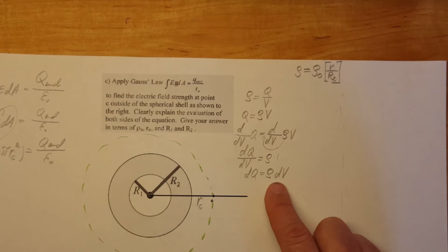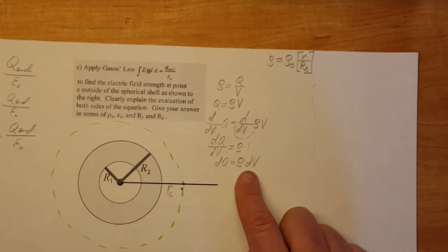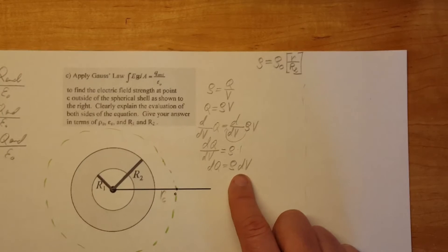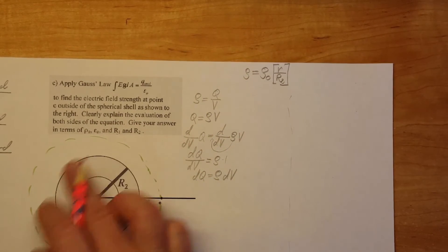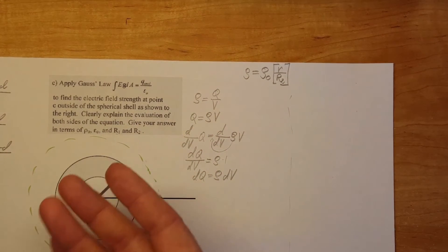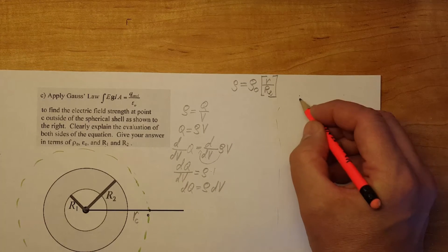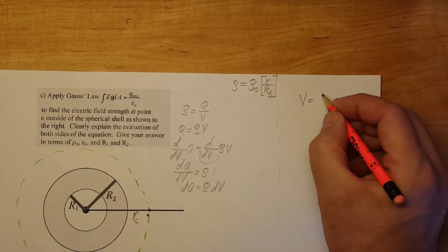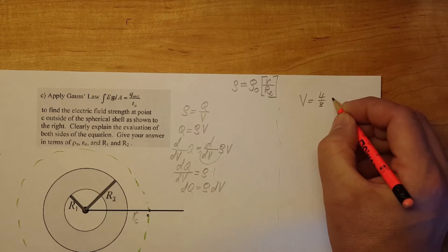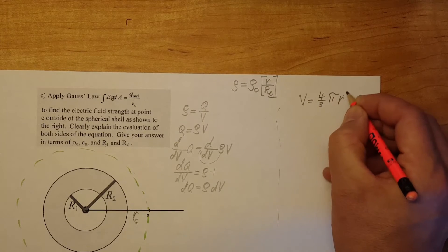Now let's work on finding a better representation for dV. Our surface a volume of a sphere so we're going to start with that V equals 4 3rd pi r cubed.